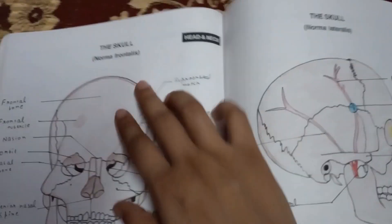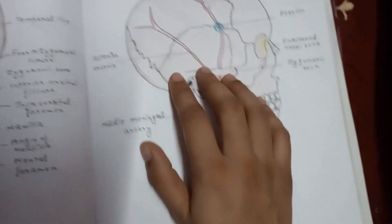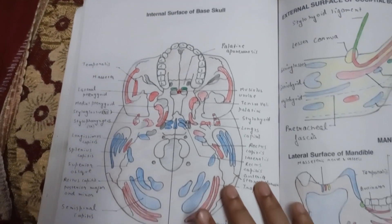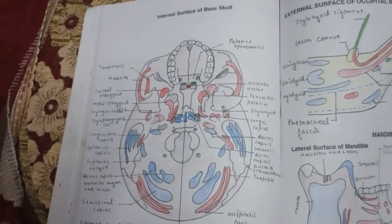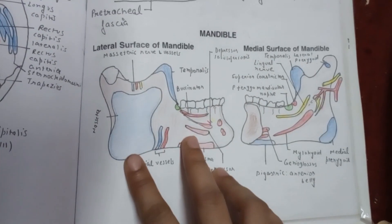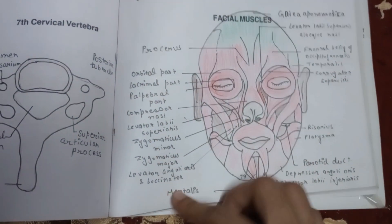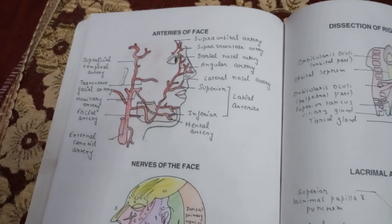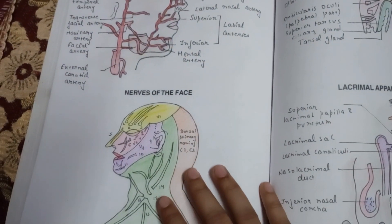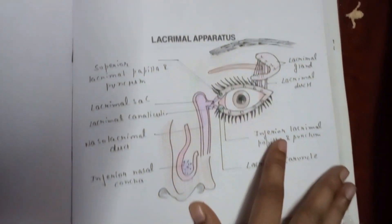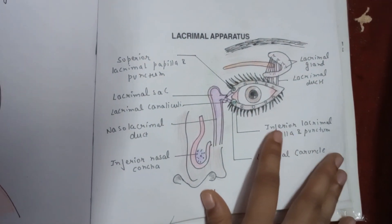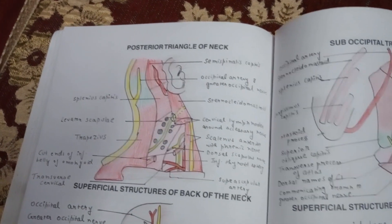This is the normal frontalis and this is the normal lateralis. This is the internal surface of your base of skull. This is the diagram of mandible — lateral surface of mandible and medial surface of mandible. Cervical vertebra. Your facial muscles — each and every labeling is clear as you can see. Arteries of your face, nerves of the face, lacrimal apparatus.